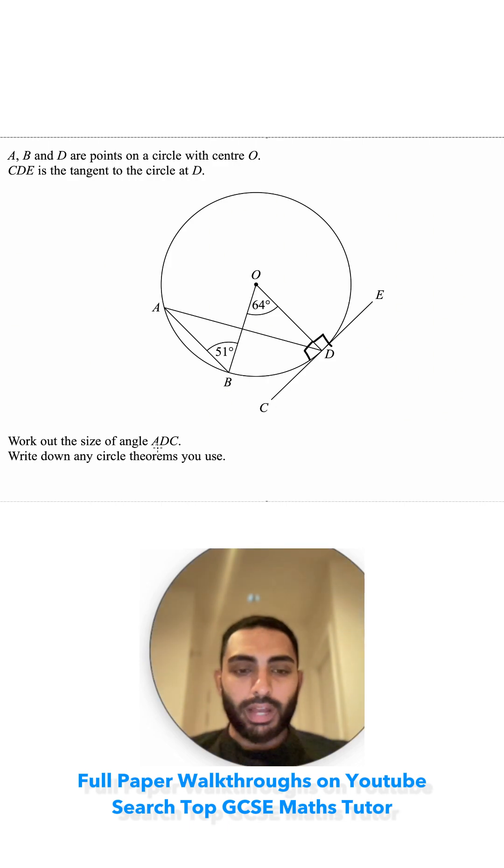Work out the size of angle ADC. So we're trying to find A to D to C, which is this small angle over here. So it's going to be part of that 90 degrees. Write down any circle theorems that you use.